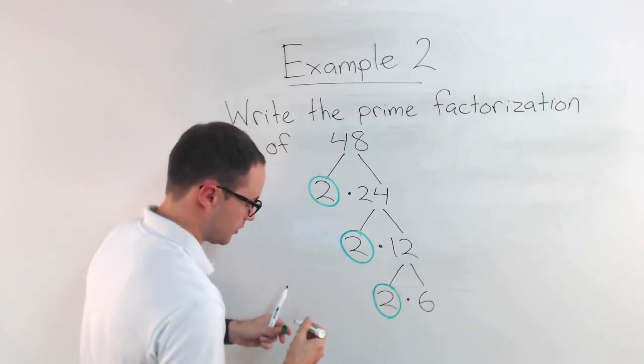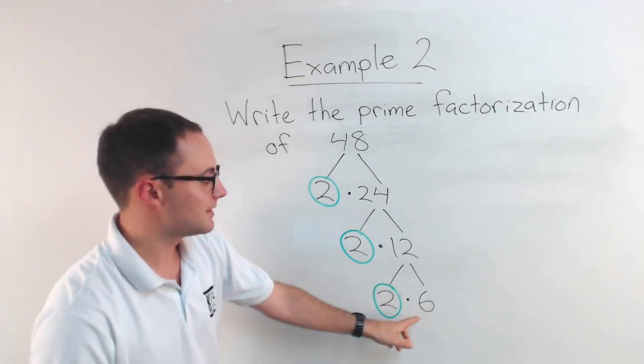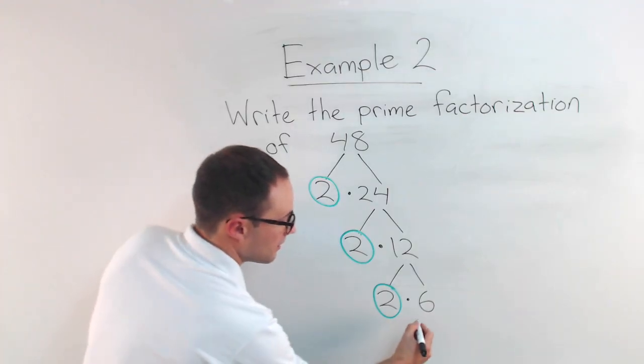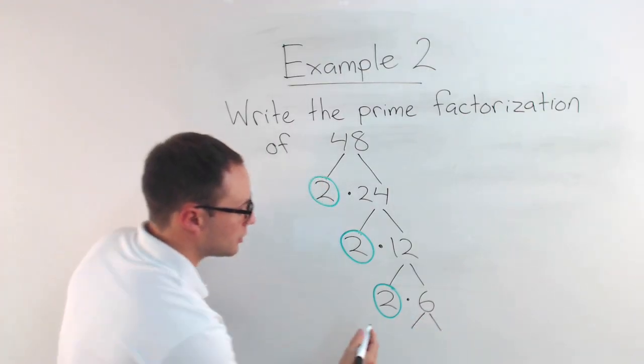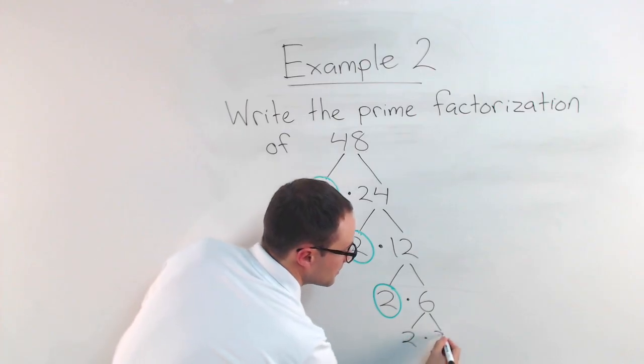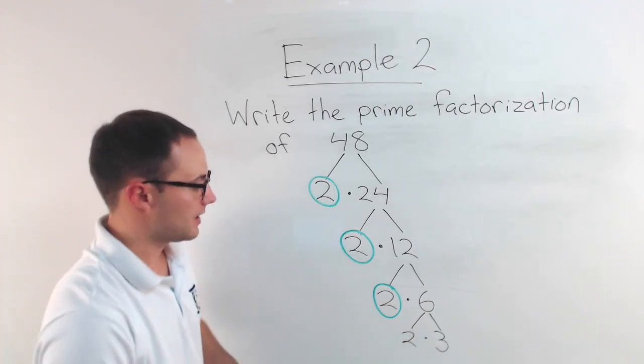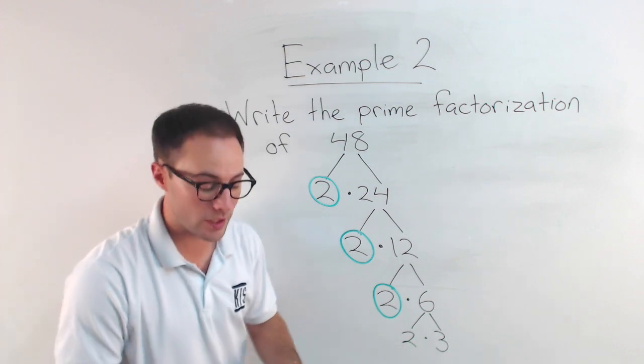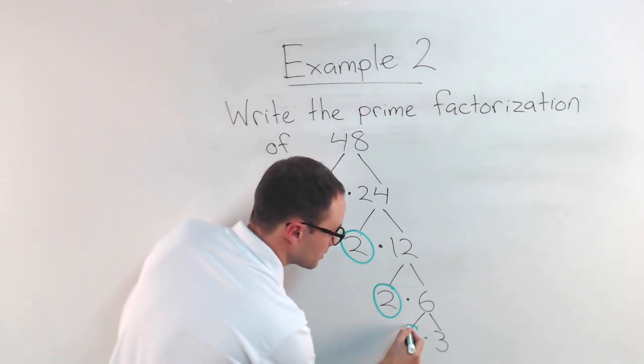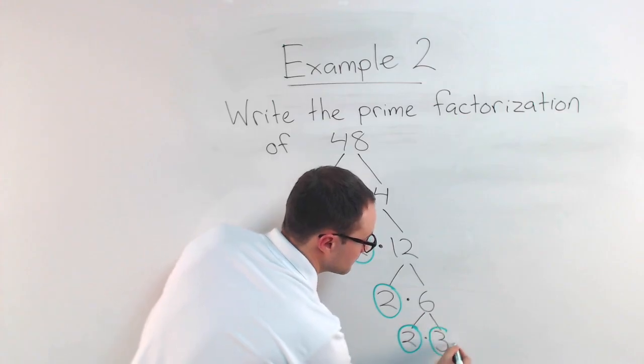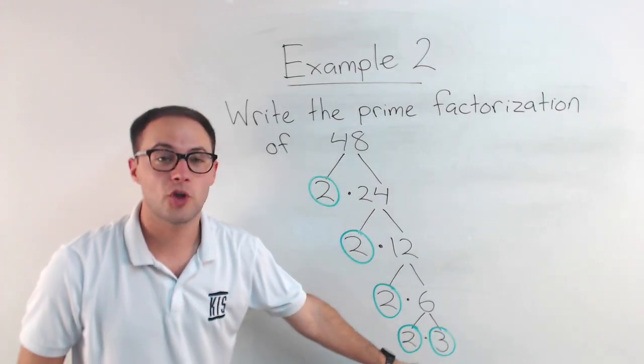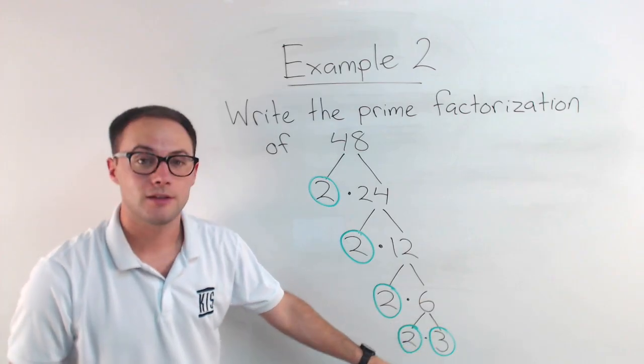There's another two that's prime. So it's done. Six is still composite. So we're not done with that. So finally, running out of room a little bit. Two times three is six. Those are two factors of six. And two and three are both prime numbers. So I'm going to circle that. And now once there's no more composite numbers, you're done.